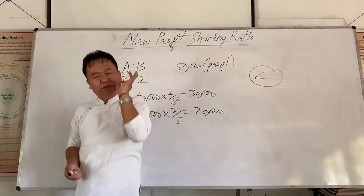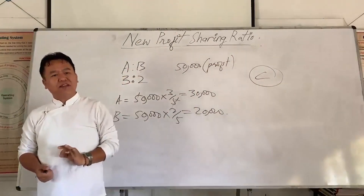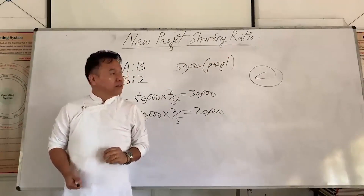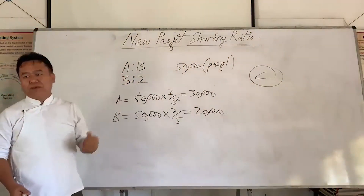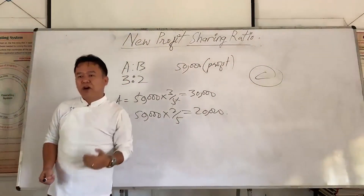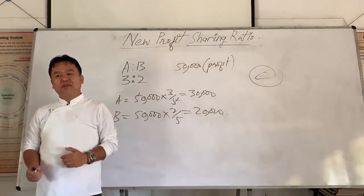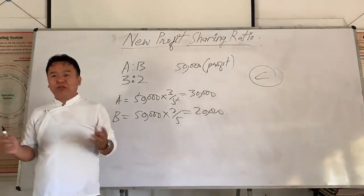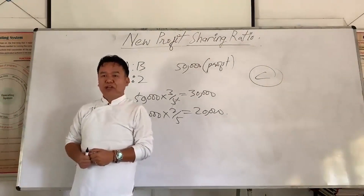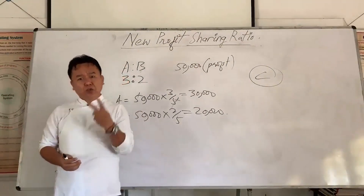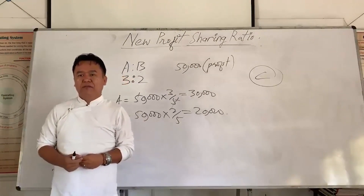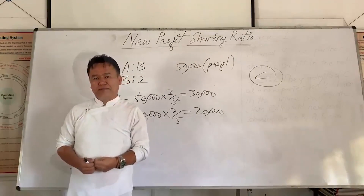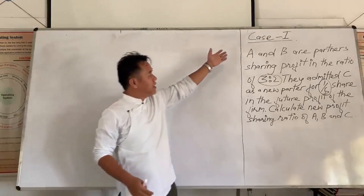Therefore it is very necessary to calculate the new profit sharing ratio whenever a new partner is admitted. Now coming to the main topic — the accounting treatment, that is how we are going to calculate new profit sharing ratio. In order to calculate new profit sharing ratio we have two main cases, but I am going to make it four in order to make you understand better.